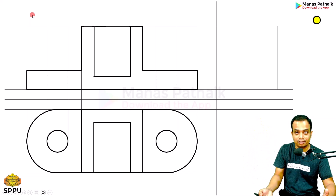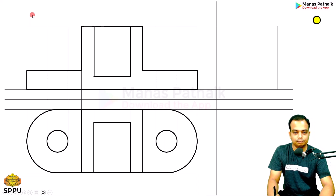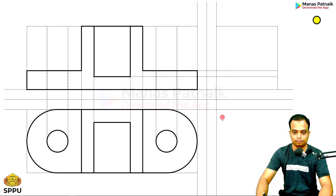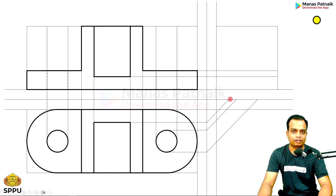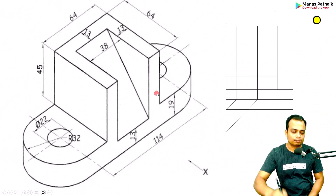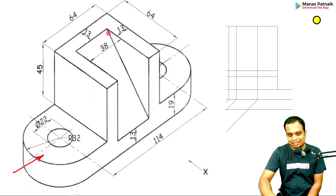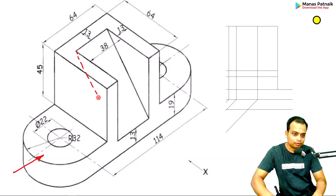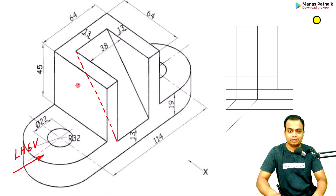We are done with the front view and top view. Now for the left-hand side view: draw lines through these points, then rotate them 45 degrees using a mini drafter or protractor, then project them vertically upward. We are looking from the left-hand side. There is a slant edge visible in the isometric view — but from the left-hand side, it is a hidden feature.